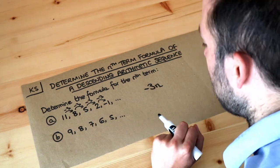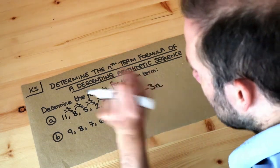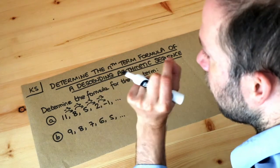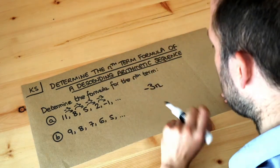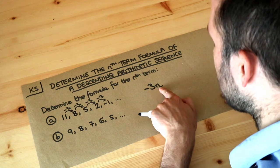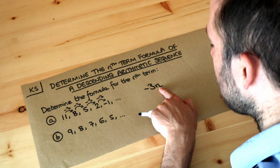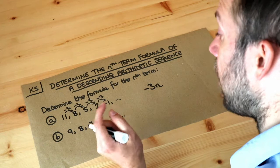Well if I want the first term then n is 1. n is 1, 1 means the position, the first term. So we do minus 3 times 1 and minus 3 times 1 is minus 3.